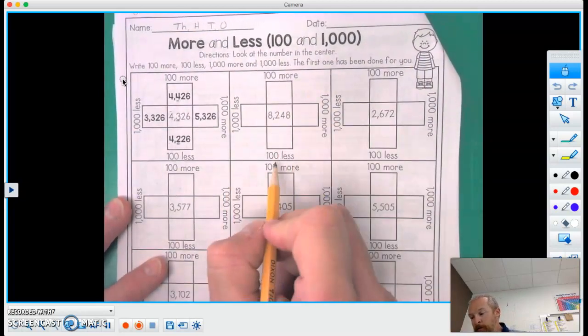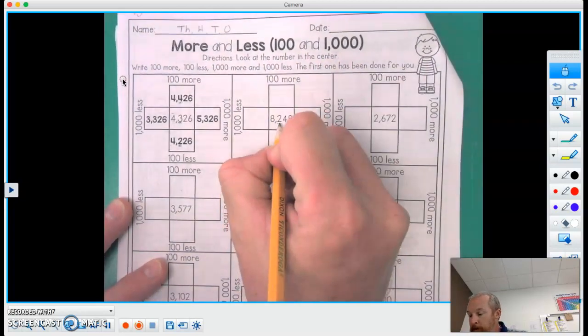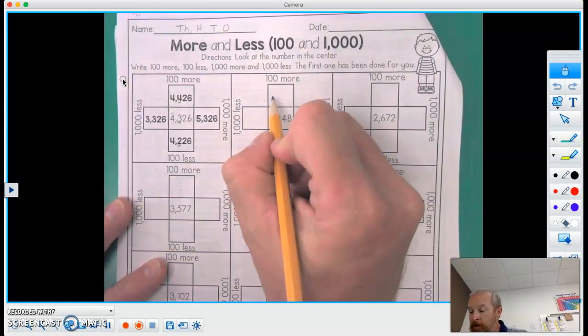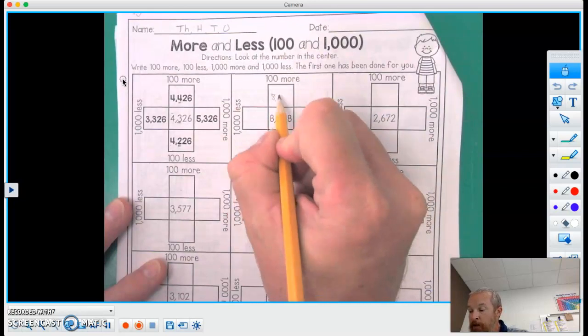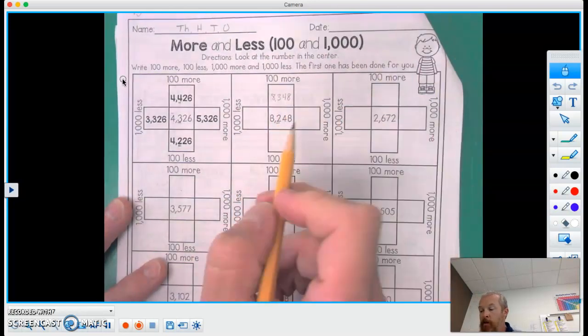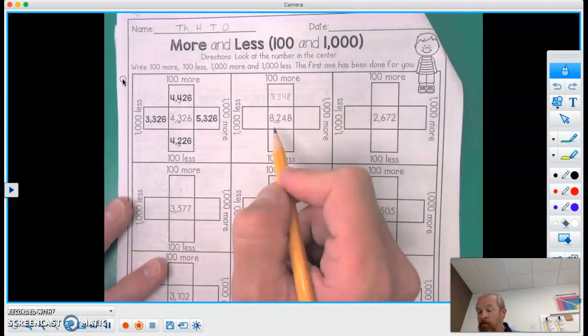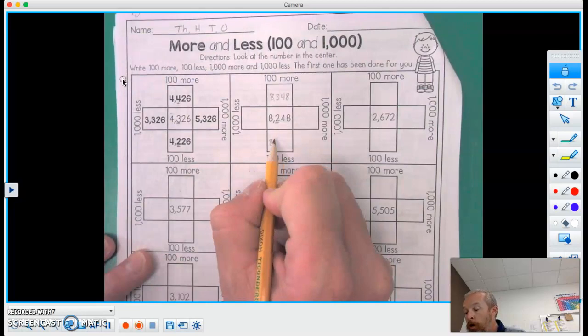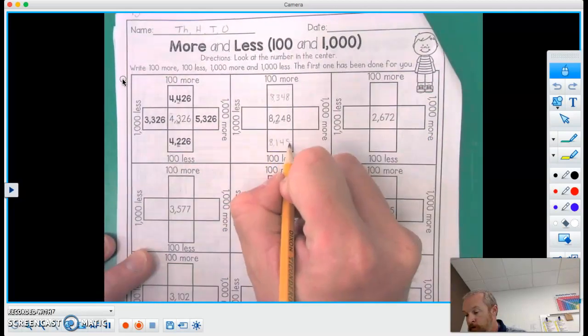So let's kind of go here. So we're going to locate our hundreds column for these two. And there it is. It's the two for 200. 100 more than that would be 8,348. And then 100 less than 2, well, 1 less than 2 would be 8,148.